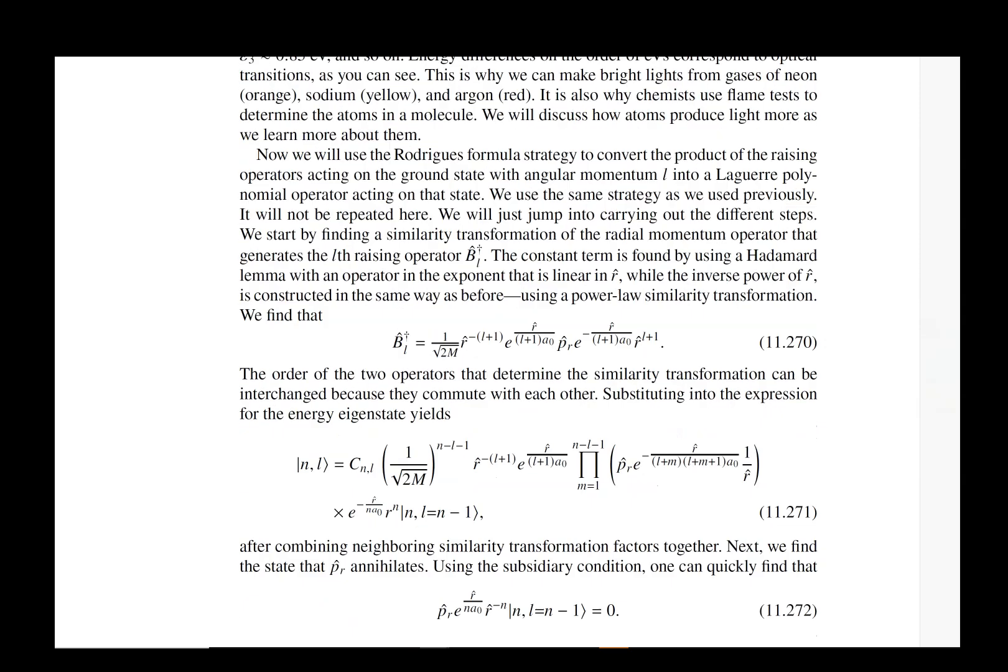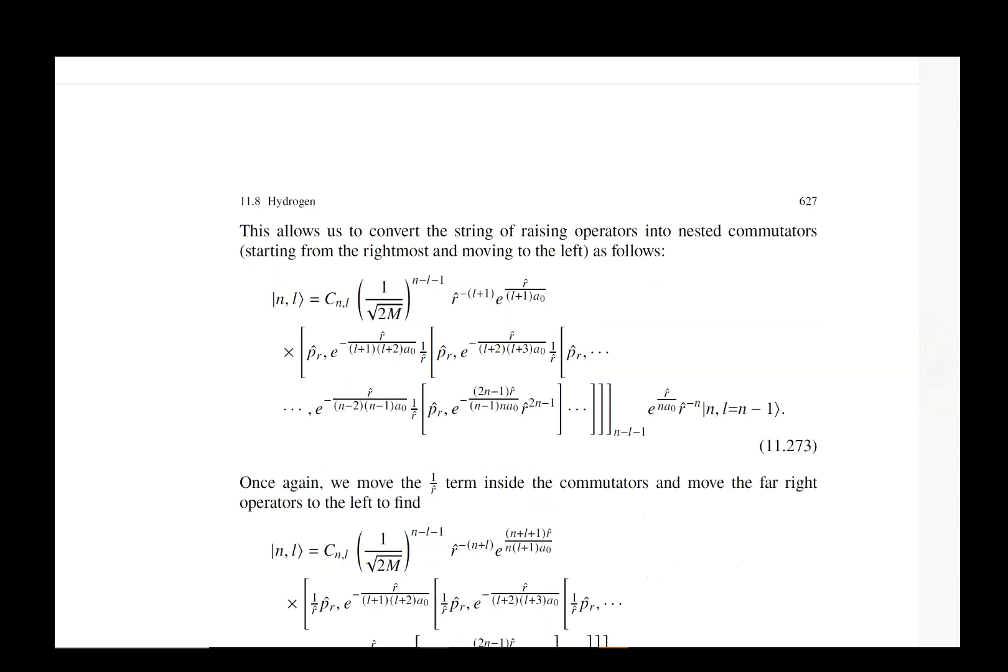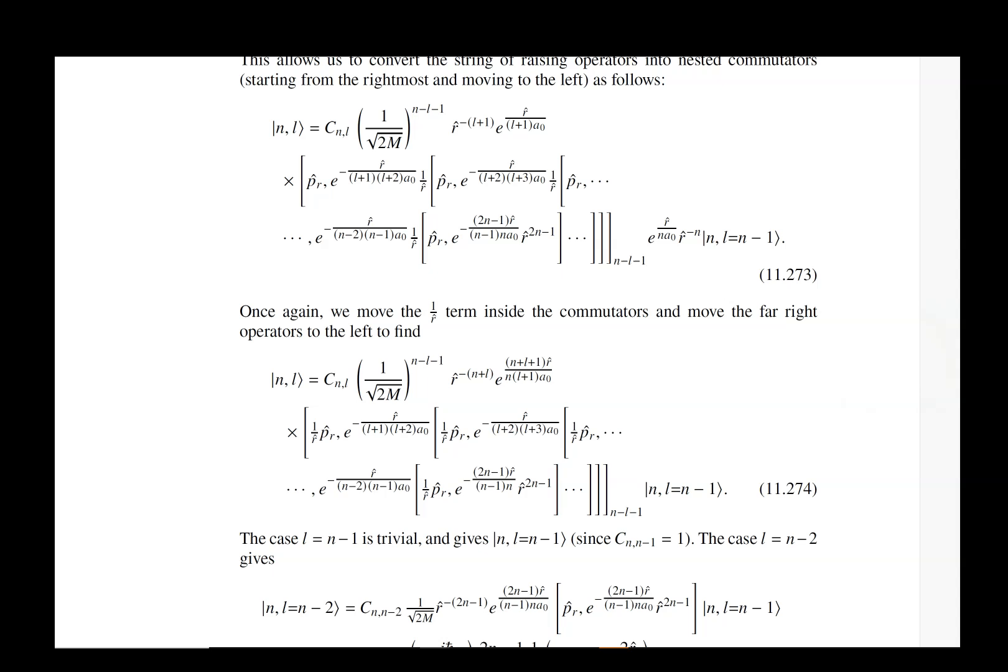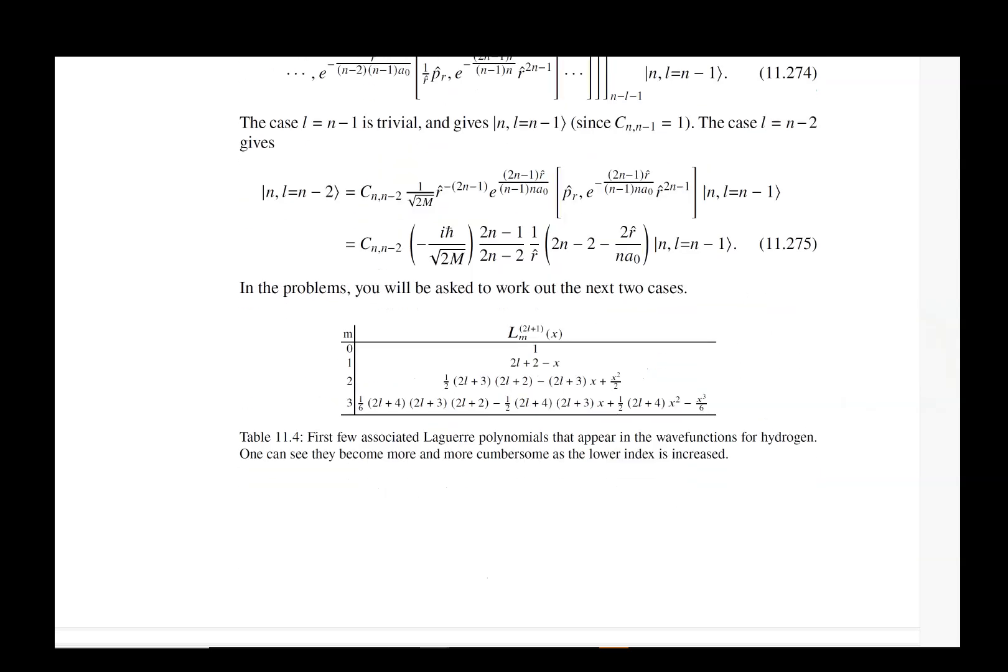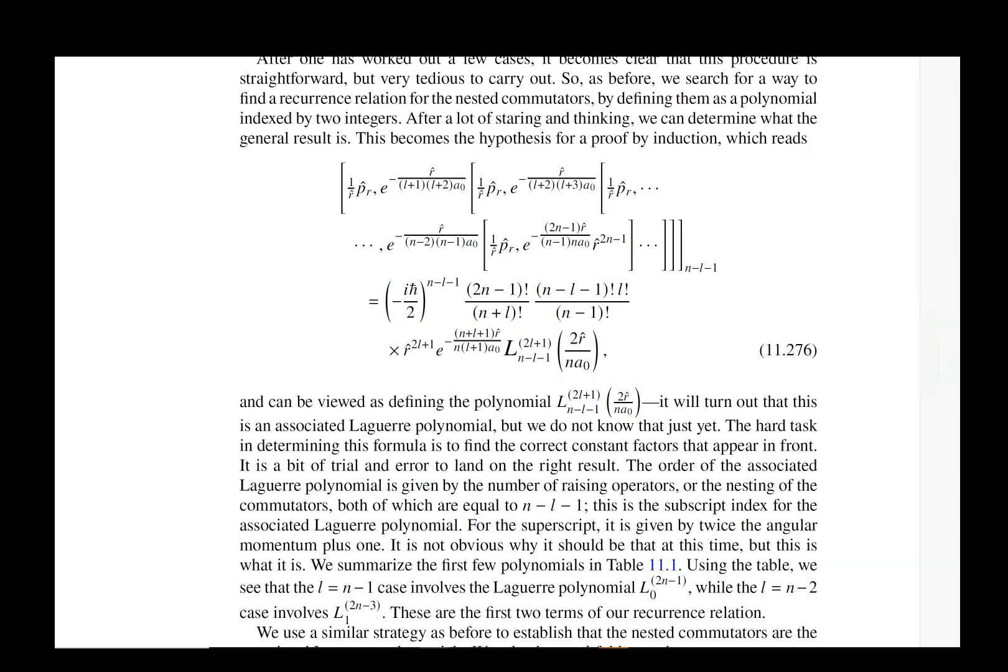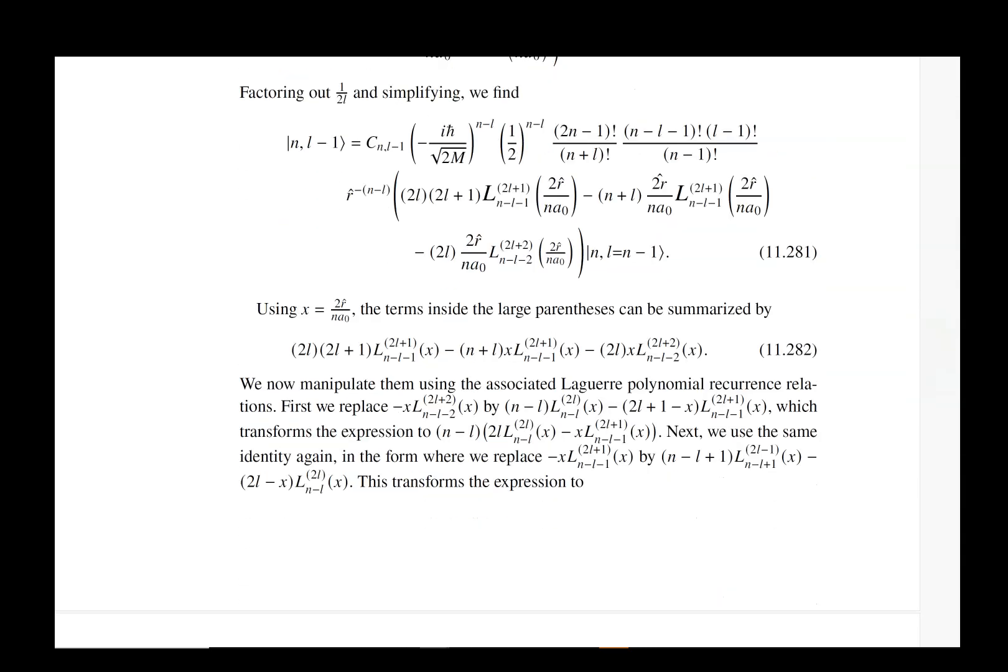That was first figured out by Fock—Russian Fock is his name. He first worked out that SO(4) symmetry. Pauli actually discovered it first in Pauli's solution of the problem.